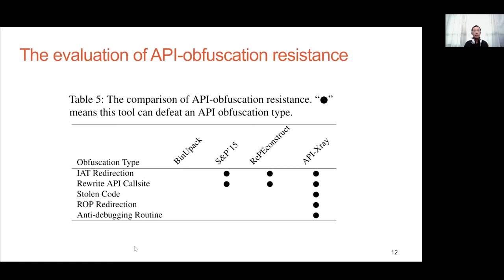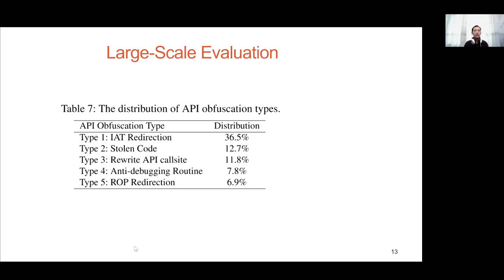In our evaluation, we compare API X-ray with three other similar approaches: bin-unpack, SNP15, and repeat construct. Bin-unpack does not handle any of our API obfuscation schemes. SNP15 and repeat construct — their dynamic analysis staff can defeat IAT redirection and rewrite API call site. API X-ray can handle all kinds of API obfuscation schemes. We also conducted a large-scale evaluation and found that IAT redirection is the most used API obfuscation scheme due to its easy development.